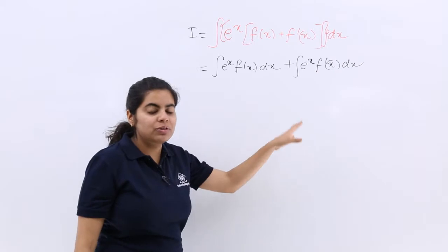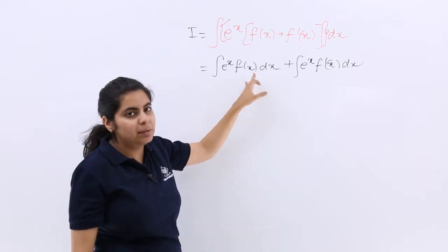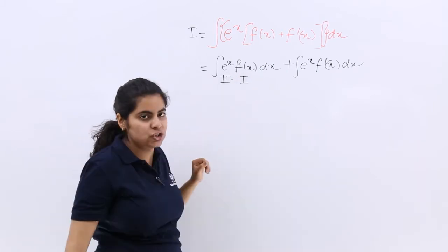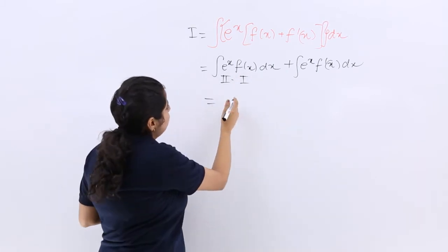How to go about next? This is exponential multiplied by a function. Exponential is always the second function, this is the first function. Let's just open it up with the help of the formula.